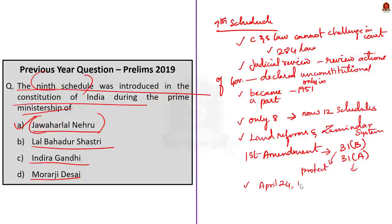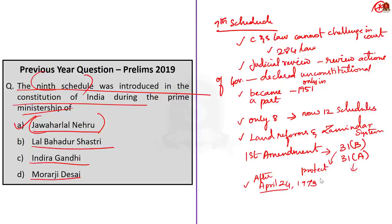Not all the laws included in this schedule are free from judicial review. The deadline is April 24, 1973 — laws added after this date are open to judicial review. The correct answer for the question is option A, Jawaharlal Nehru. Learning schedules and articles is very important. In Laxmikanth's book there is a separate table column for reference. If you can remember that the first amendment was the inclusion of the ninth schedule made in 1951, you can easily arrive at the answer.